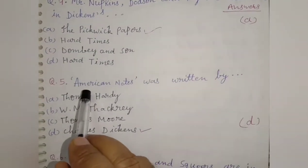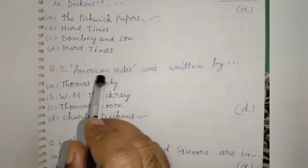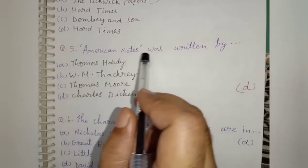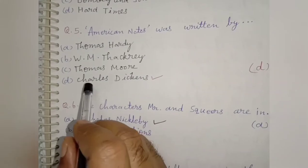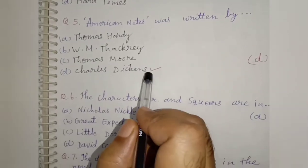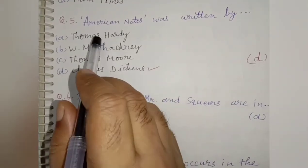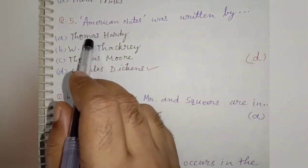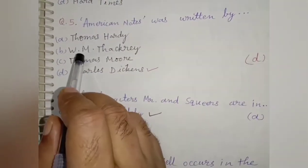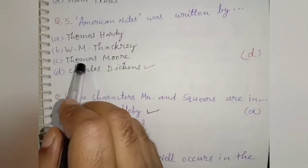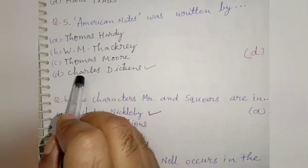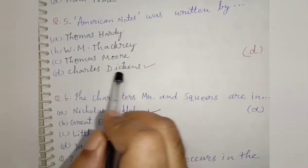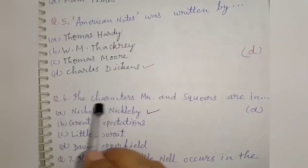Next question: American Notes was written by Charles Dickens. There are other options like Thomas Hardy, W. M. Thackeray, and Thomas Moore, but the right option is Charles Dickens.